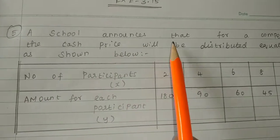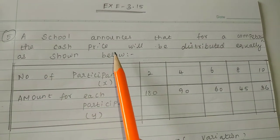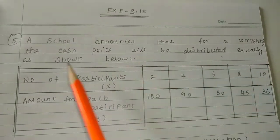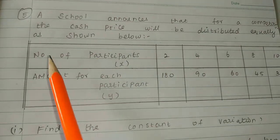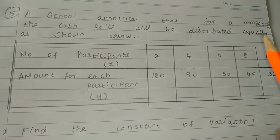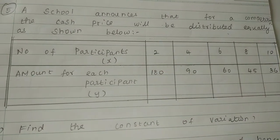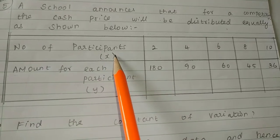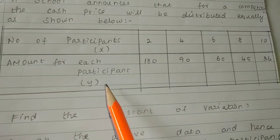A school announces that for the competition, the cash prize will be distributed equally as shown below. The number of participants is X and the amount for each participant is Y.